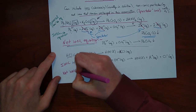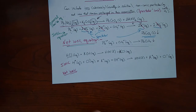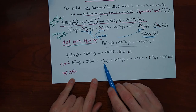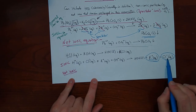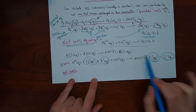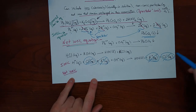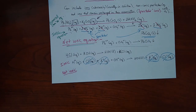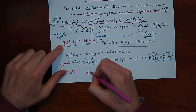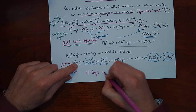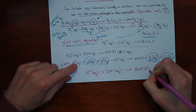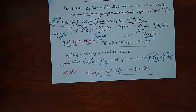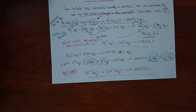To write the net ionic equation, we identify the spectator ions — which are not changing and remain in solution the same way on both sides. It's the potassium and chloride: ionized and dissolved on both sides, they didn't combine with anything. So the net ionic equation is everything else: H⁺ + OH⁻ → H₂O. That is the net ionic equation. Hopefully this helps you complete the homework — it can be a little confusing, so let me know if you have questions.